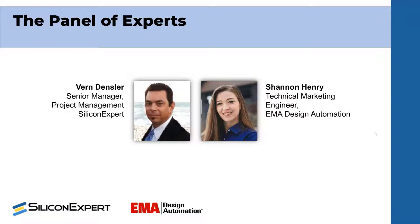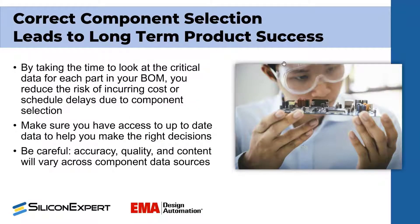We're going to talk about the component selection process. It's really important that we make good decisions up front when we're selecting our parts for our bill of materials. The further to the left that we can move things when making these selections the better, because we don't want to deal with things like obsolescence, being out of compliance, or possibly getting counterfeit parts.